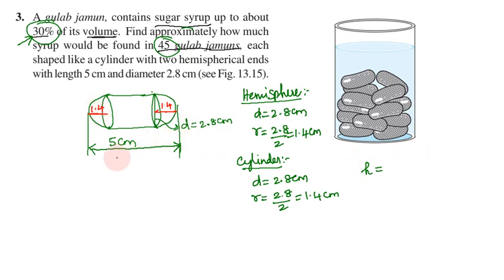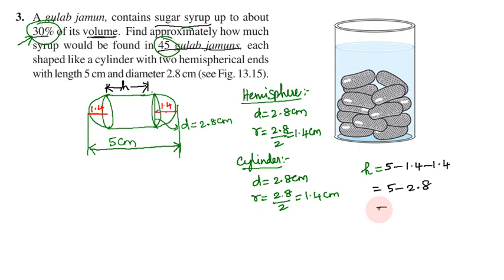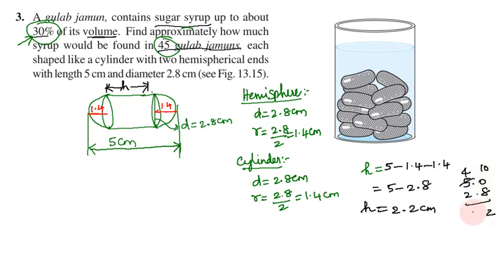The total length is 5 cm. The height of the cylinder equals the total length minus the two hemispherical ends: 5 minus 1.4 minus 1.4, which equals 5 minus 2.8, giving a cylinder height of 2.2 cm.